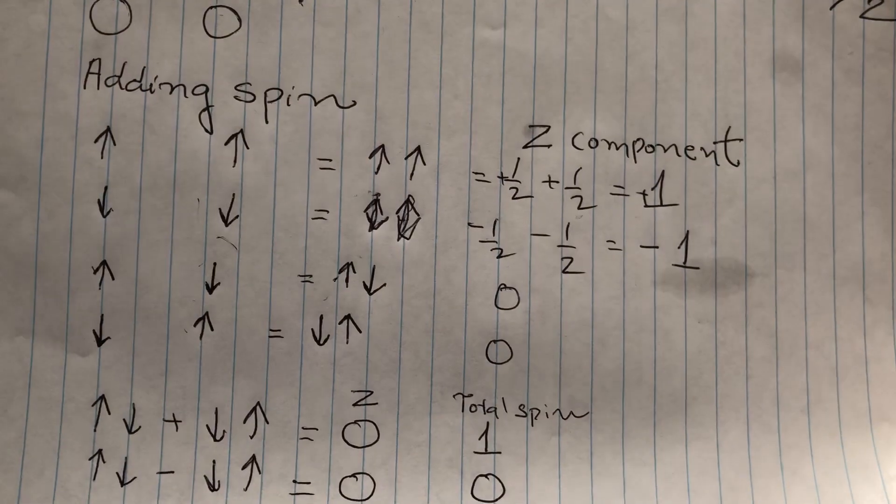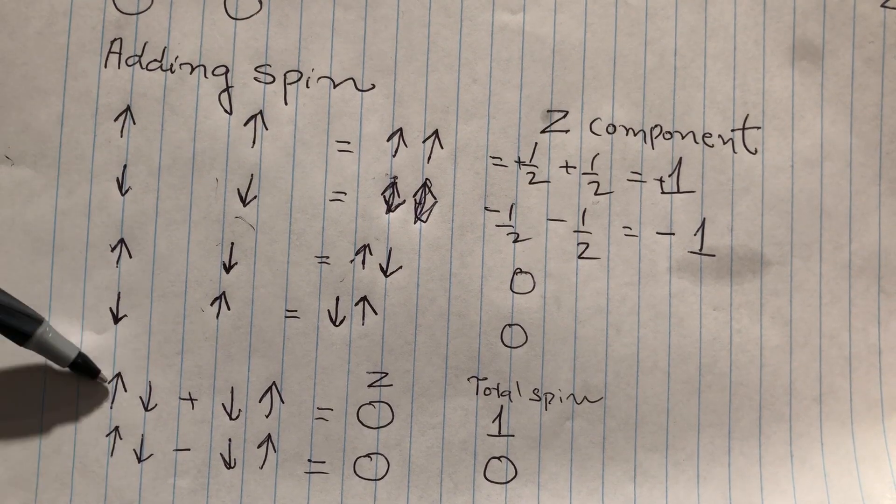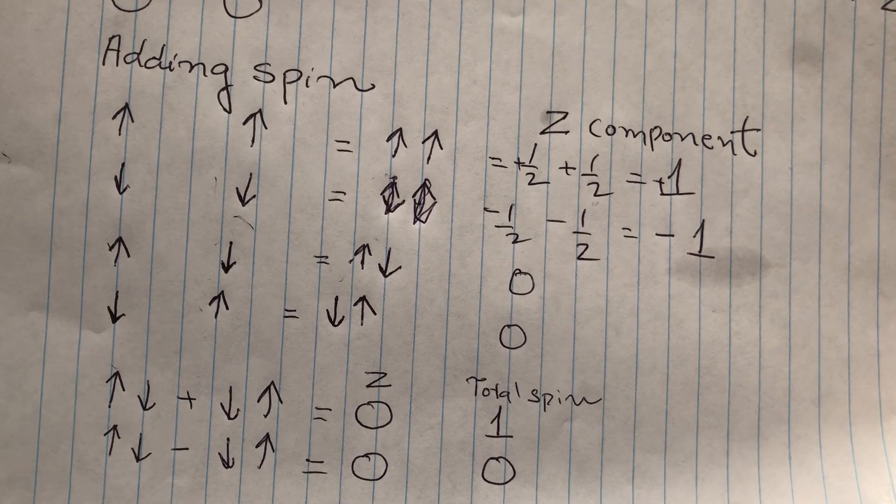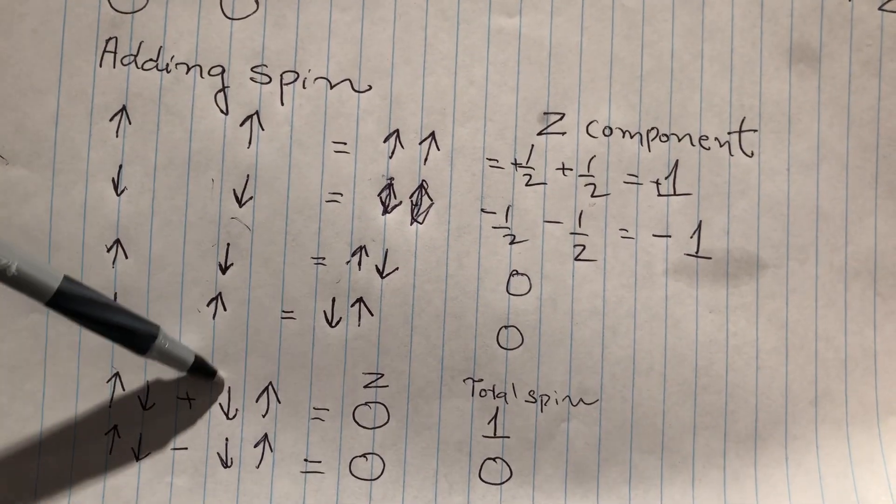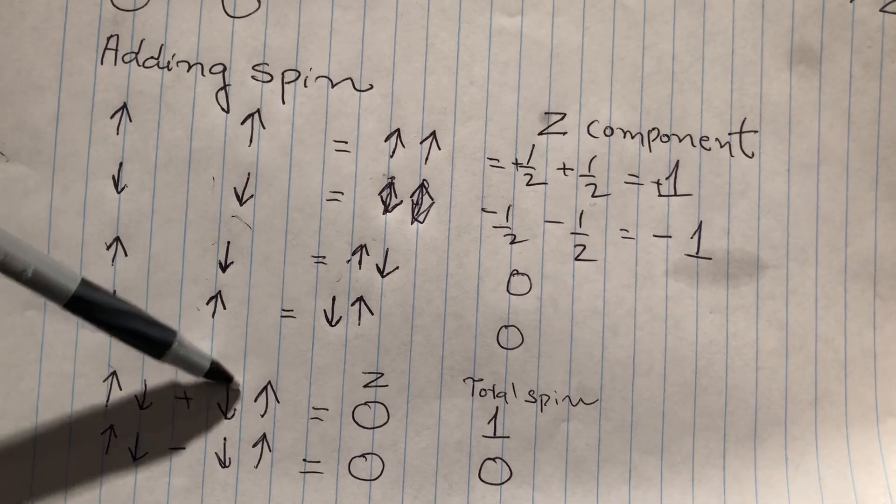So these two states are not allowed. Instead, we have to combine them. So, what we can say is, either this is electron one and it has up component and this is electron two, or this is electron one and this is electron two. So this way you can combine.